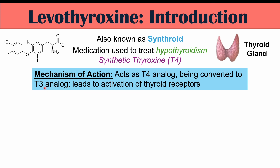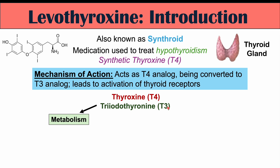T4 can be thought of as a reservoir form of thyroid hormone that gets converted to T3, or triiodothyronine, the active form. Once converted into T3, it leads to activation of thyroid receptors inside cells. The thyroid gland produces both T4 and T3, and these lead to particular effects in the body, including the three M's: metabolism, movement, and mentation.